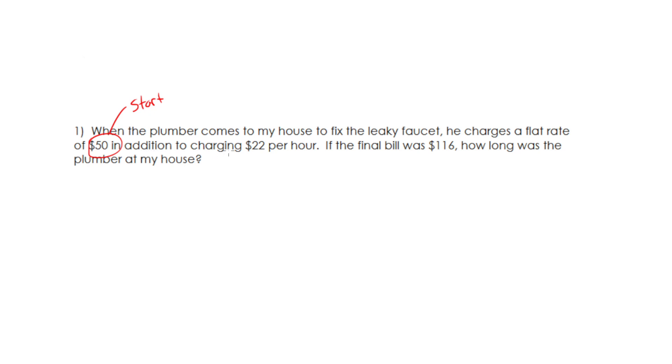And then in addition, he charges $22 per hour. So this is my, because it has the word per, I know this is my changing amount. It's the amount that's going to get multiplied by the number of hours. So this start is also a y-intercept, and the change is a slope.